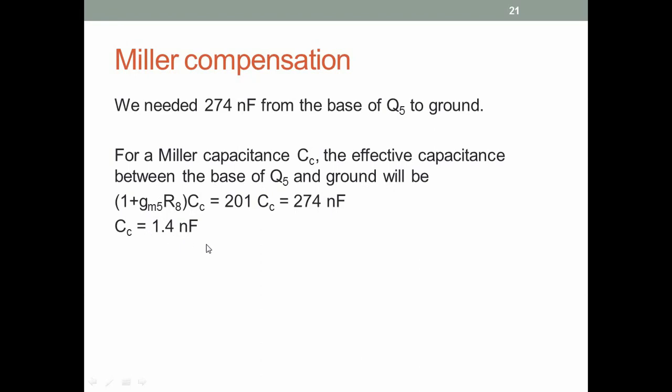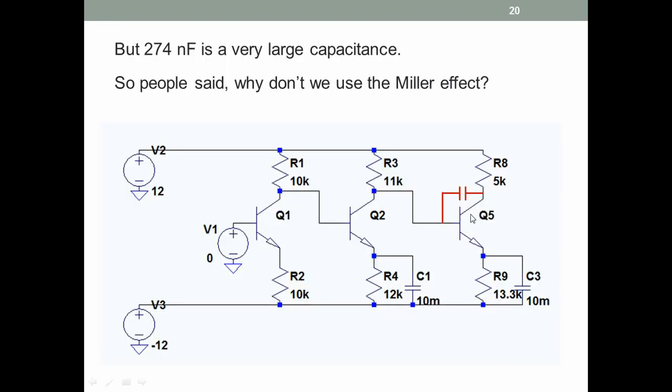Most integrated circuit amplifiers will have a compensation capacitor connected at the node where the largest time constant occurs, connected between the input and output of that stage. This is dominant pole compensation.